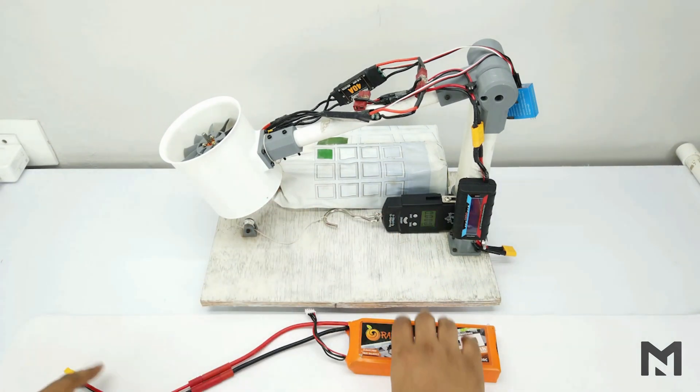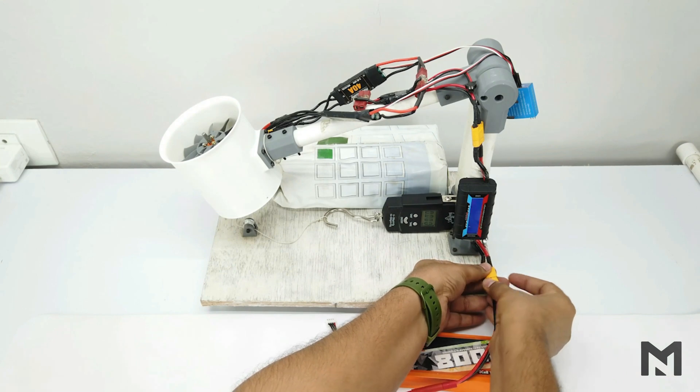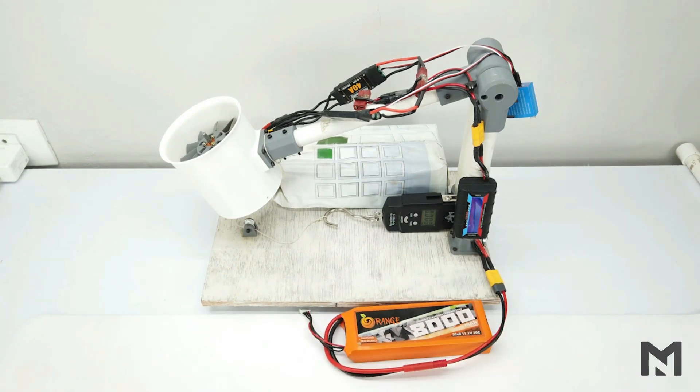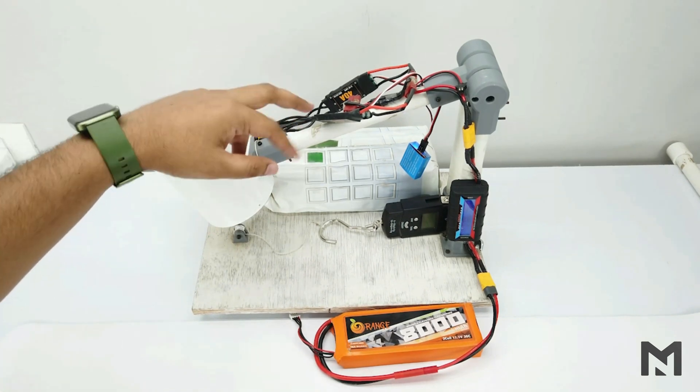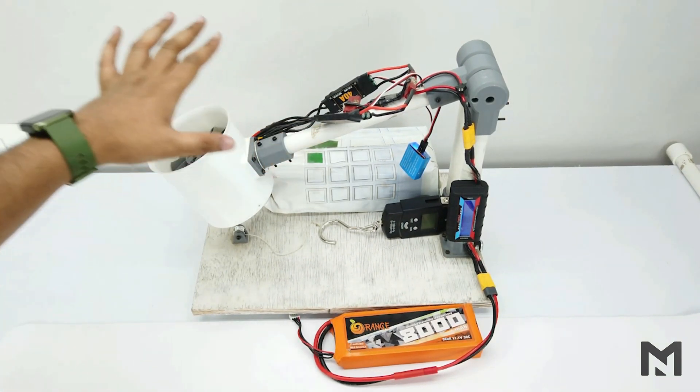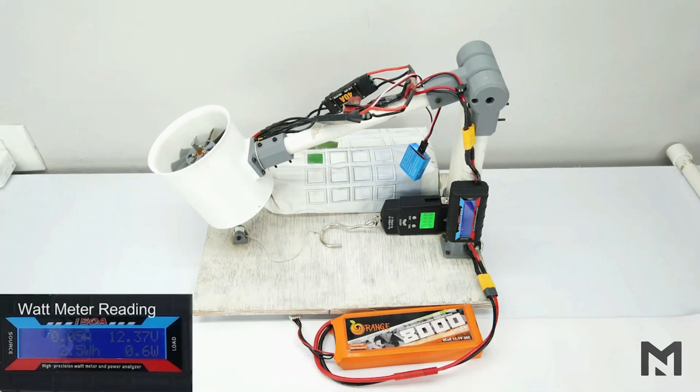So first I will connect a 3S battery. At any condition, I won't take this test above 70 amperes, because both ESCs have a maximum limit of 40 amperes. So first I will test it using a 3S battery.